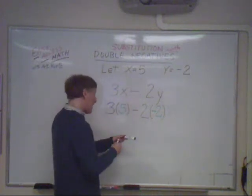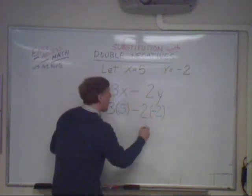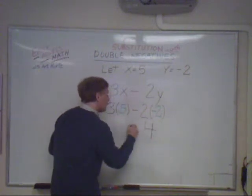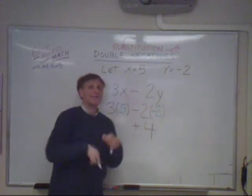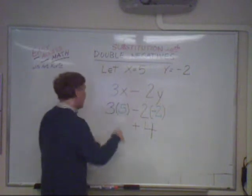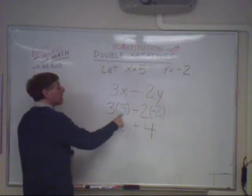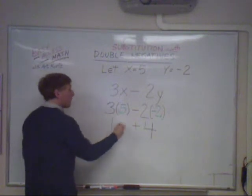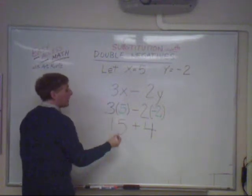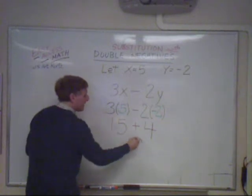And negative 2 times negative 2 is positive 4. So, you see, the two negatives turn positive. Over here, I have 3 times 5, and that gives me 15. And 15 plus 4, 19.